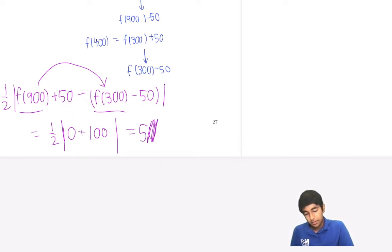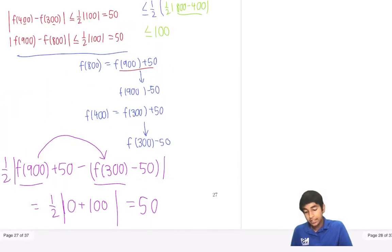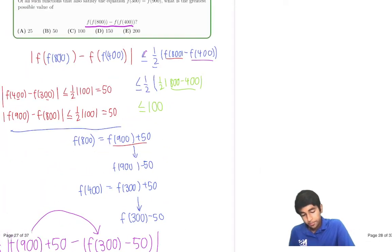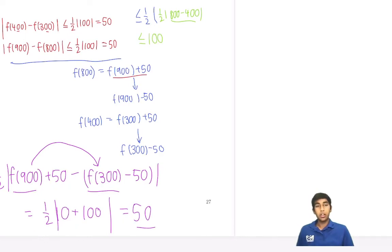Also, now we have another bound it seems like. Well, now we know that it's less than or equal to 50. It has to be less than or equal to 50. Right?